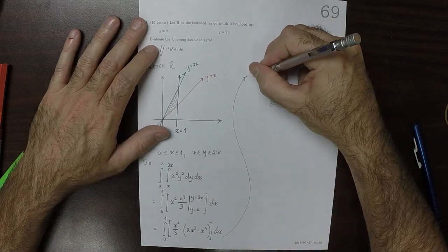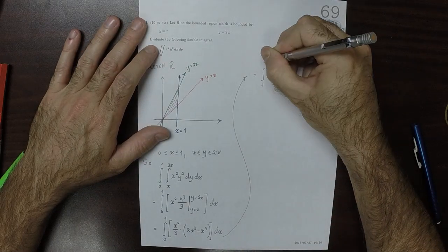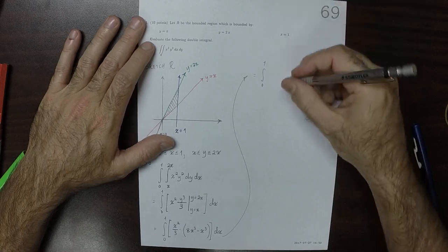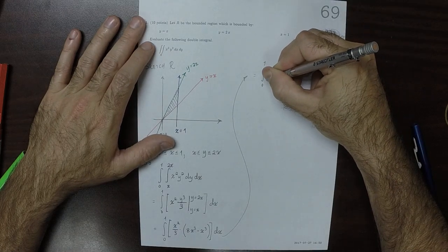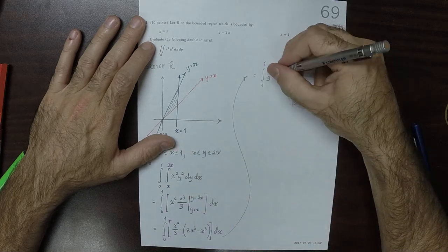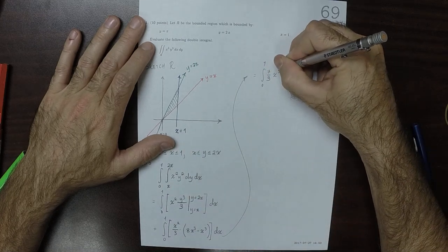So that would be integral from 0 to 1, 7 thirds times X cubed times X squared, which is X to the 5, dX.